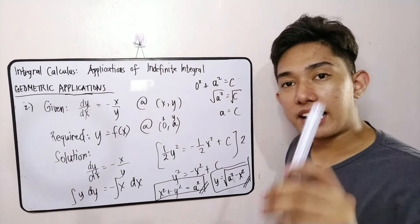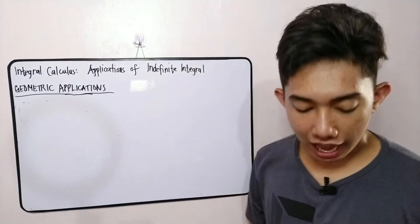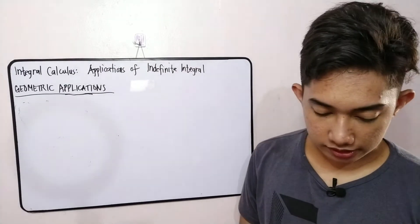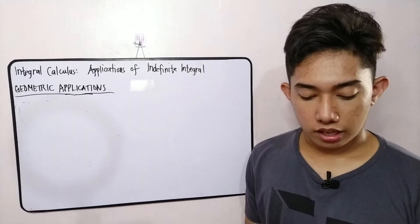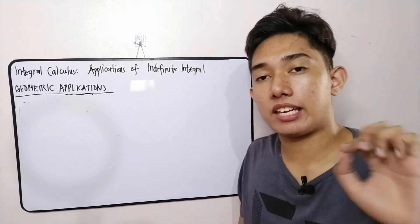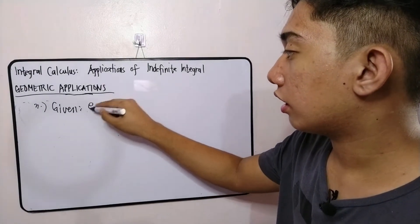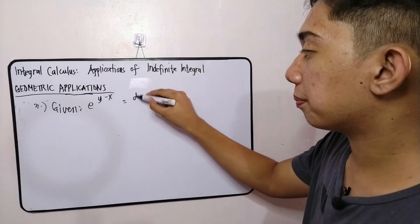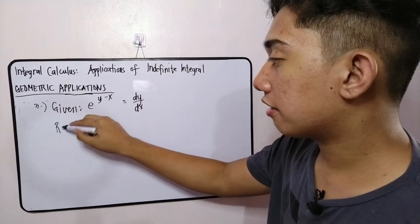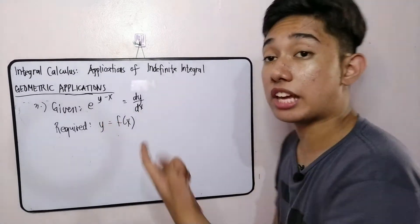Let's proceed to our third and final problem. We are asked to find the equation of the curve again, but this time only the slope at any point (x, y) is given. The slope is e raised to (y − x). Since no initial value is provided, we will find the general solution — meaning our answer will include a plus c.